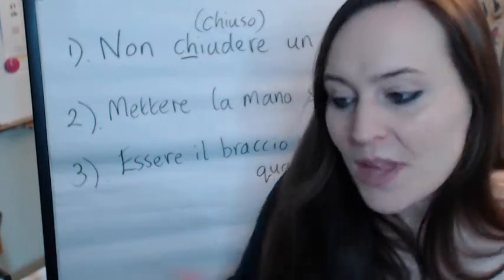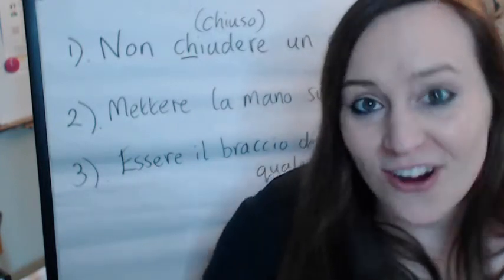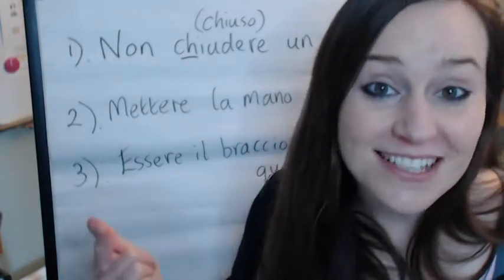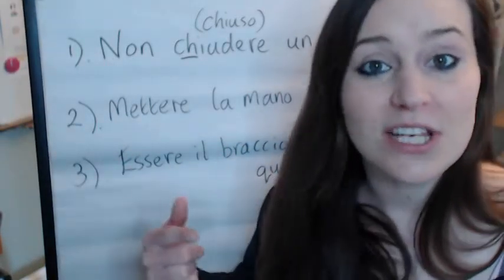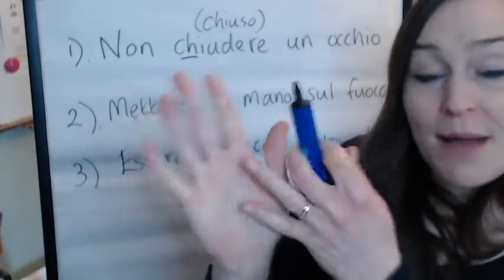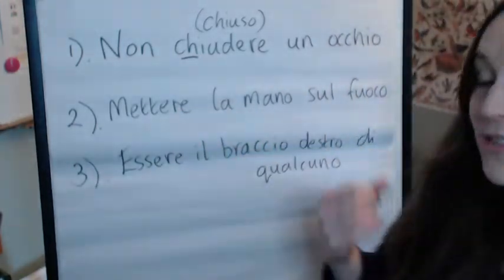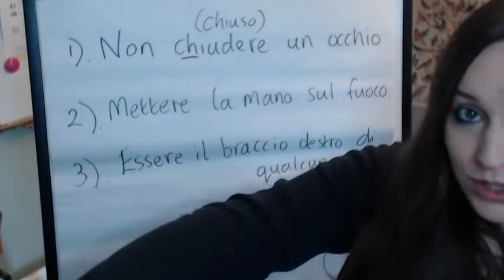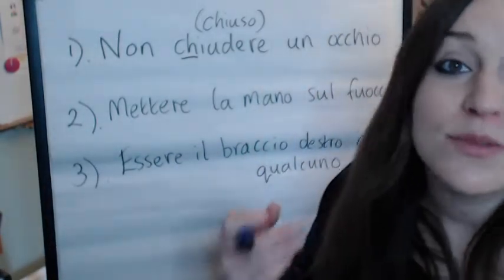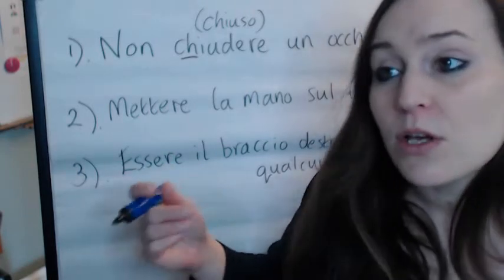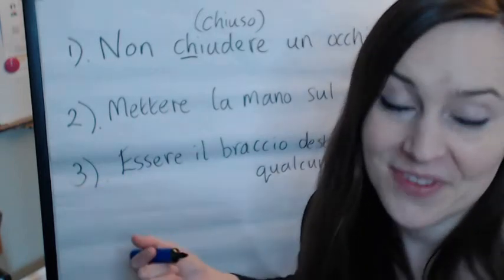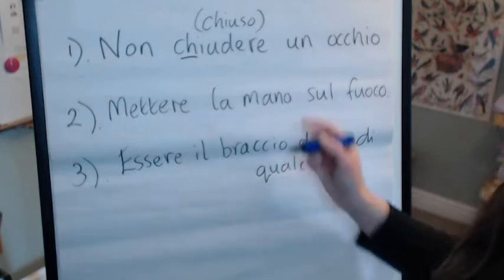Luisa will pass the exam — I would bet my right arm on it. That's the nice little English equivalent. Or in English you could say 'I will bet my right arm on it.' Ci metto la mano sul fuoco. Fuoco is fire, and the verb is mettere, which means to put or to place something. It could also be 'I guarantee it' — she will pass the exam, I guarantee it.